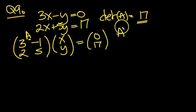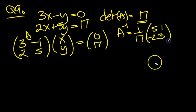And the inverse is 1 over 17, and then flip this around to 5, 3, and flip the sign of this to 1, minus 2. So that's the inverse.